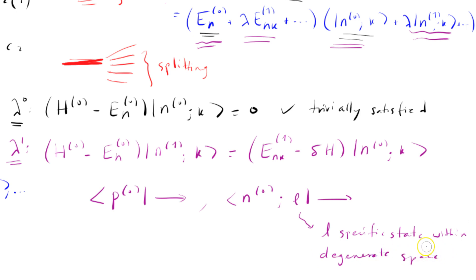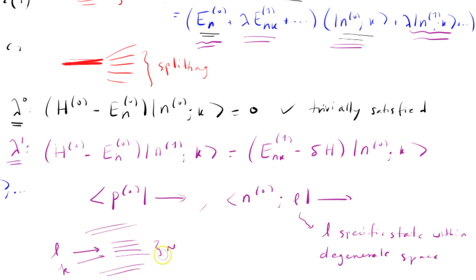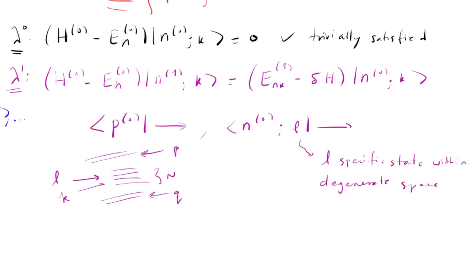⟨N0L| refers to the same degenerate eigenstates, where L refers to a specific state within the degenerate space. We have capital N degenerate states, all with the same energy. L refers to one of them that's fixed — it could be the third one, for example — and K refers to another fixed one. P can refer to any non-degenerate state. These labels just refer to which eigenstate we're dealing with.